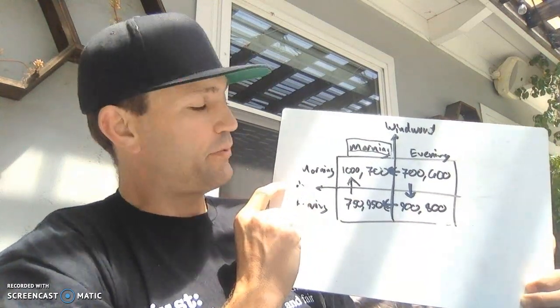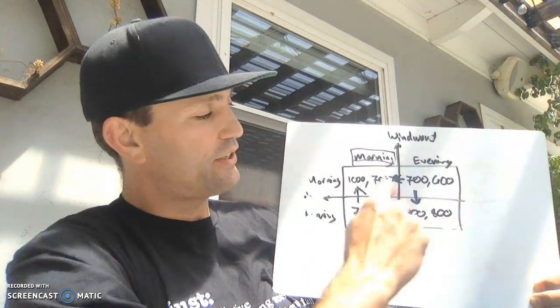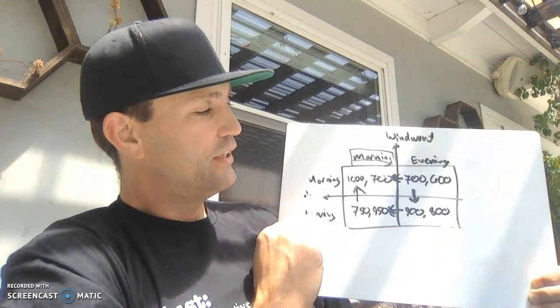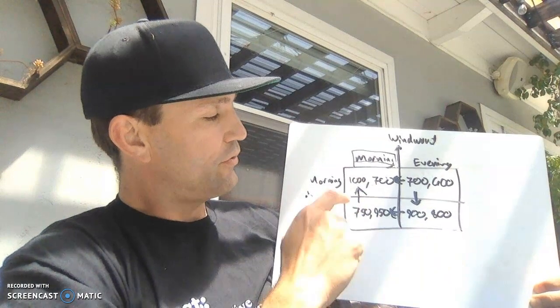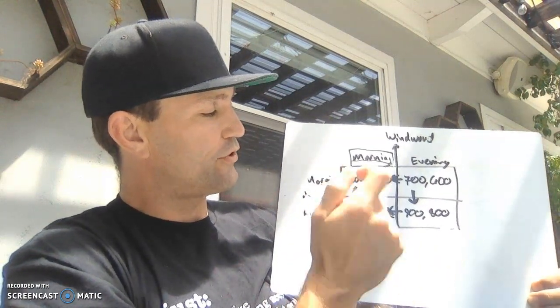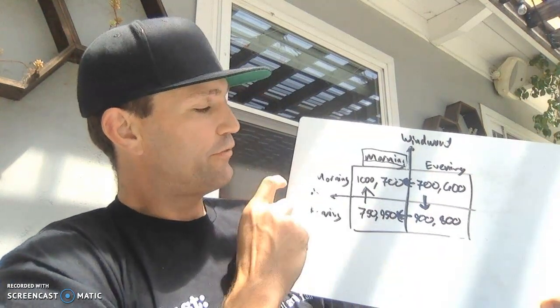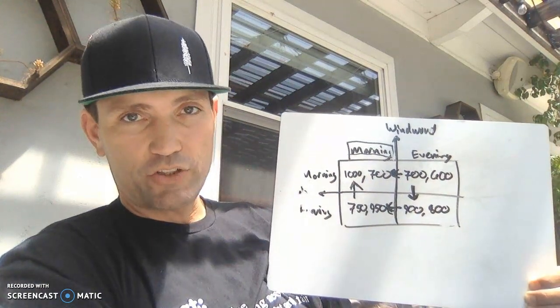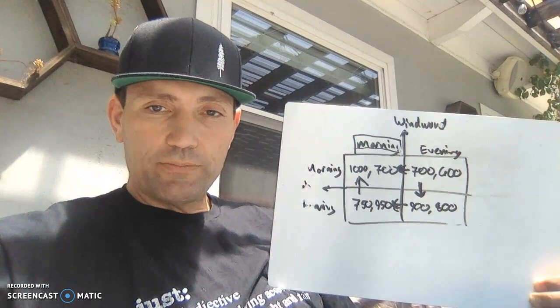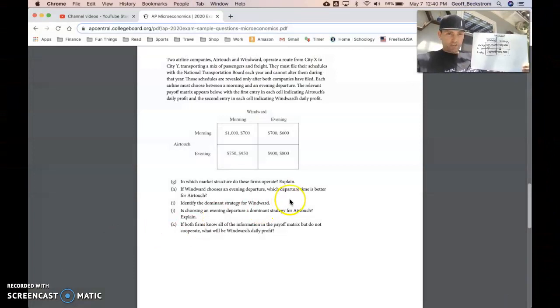To find any dominant strategy for the player on the left, in this case it's Air Touch, we use the horizontal line going across the middle of the payoff matrix, and we look at the values and compare across that horizontal line. So which one's better, 1000 or 750? We draw our arrow towards the 1000 because they'd rather have that, of course, but 900 is better than 700. So for Air Touch, there is no dominant strategy because our little arrows that we drew are pointing in opposite directions. So the next portion of the question is going to ask us about a Nash equilibrium, and those little arrows will help us find that as well.